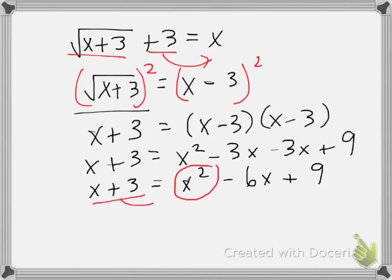And so what that means is I need to move everything to one side. I'm going to do this by subtracting an x, which gives me the minus 7x, and I'm going to minus 3 here to get a plus 6.